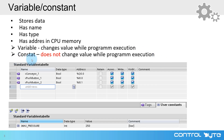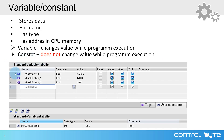A variable possesses an address in CPU memory and, most importantly, a variable changes its value during program execution. A constant is similar to a variable. The main difference is that a constant does not change its value during program execution — you define one value for this element.